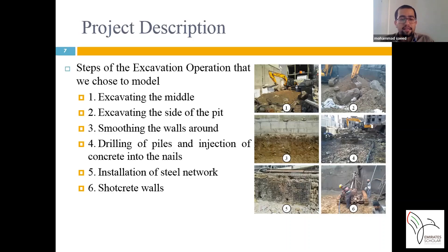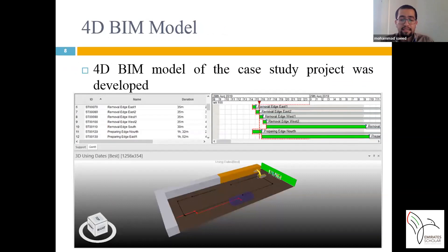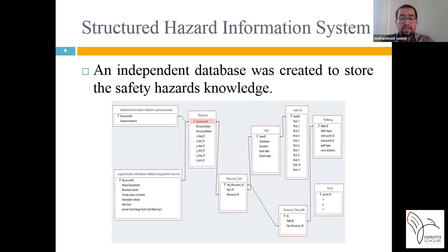The 3D BIM model of the project was created, and the schedule for the excavation and stabilization process was connected to the model. Therefore, a 4D BIM model of the project was developed. The figure shows a view of the generated 4D BIM model of the case study project. An independent database was also created to store safety hazard knowledge. We designed the database structure, including tables, properties of each table, and connections between them. The figure shows the tables, relationships between them, and their characteristics.